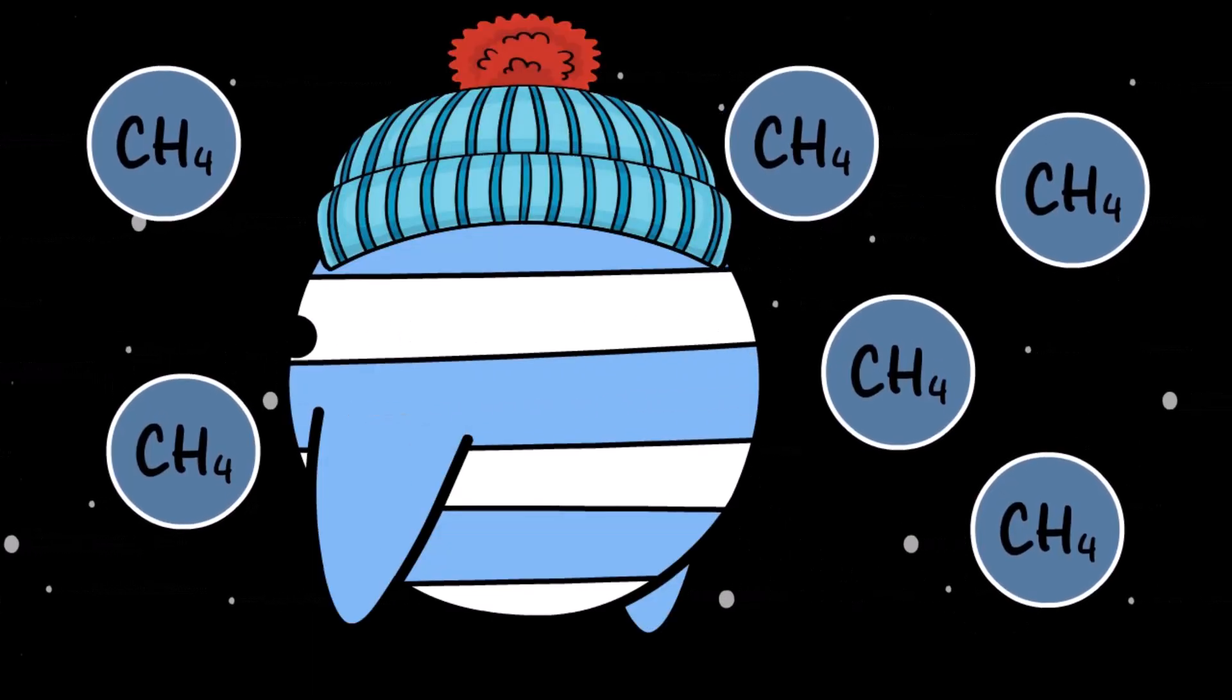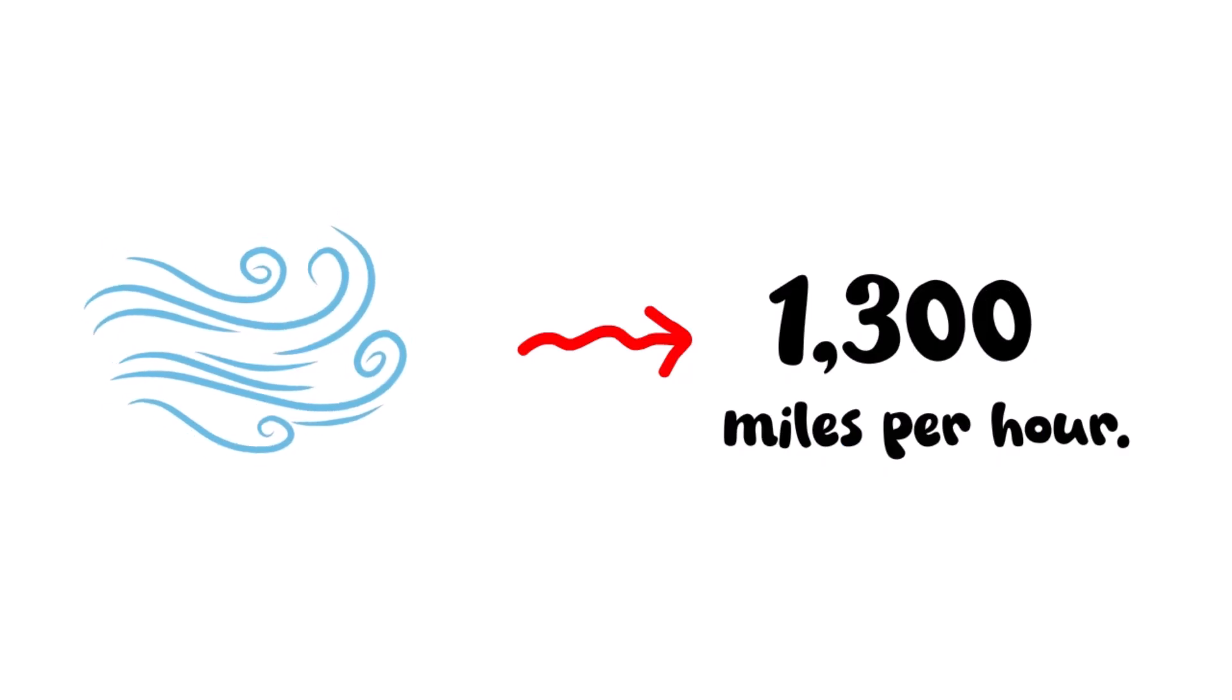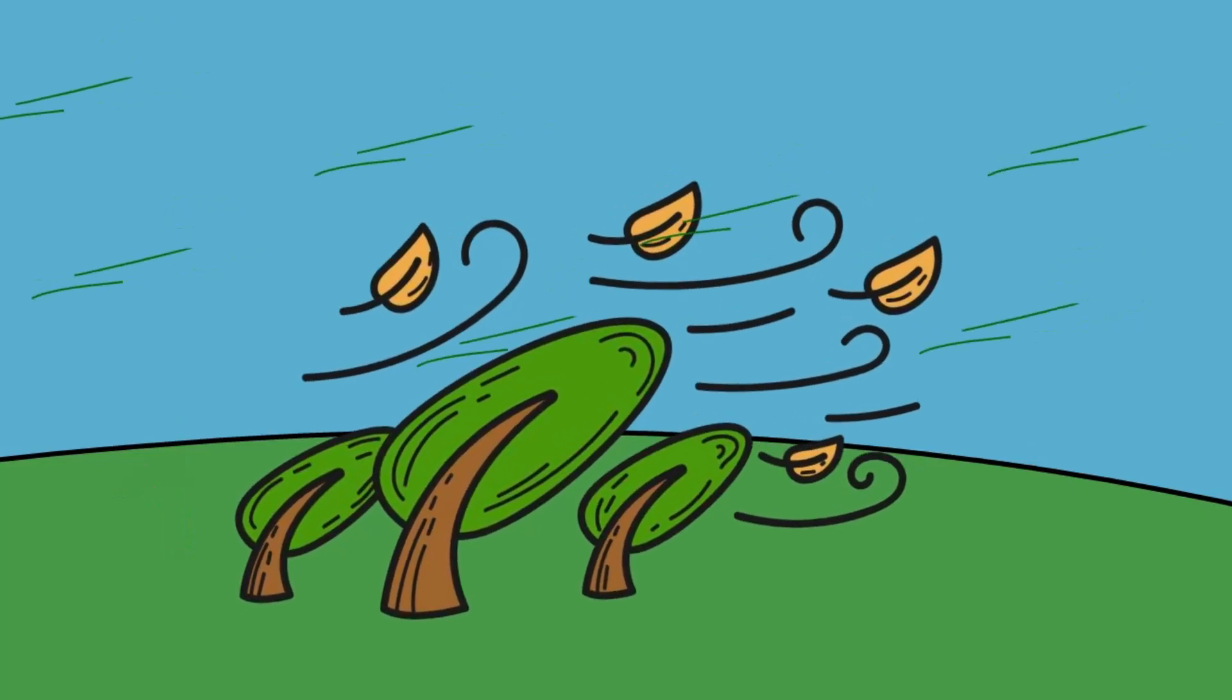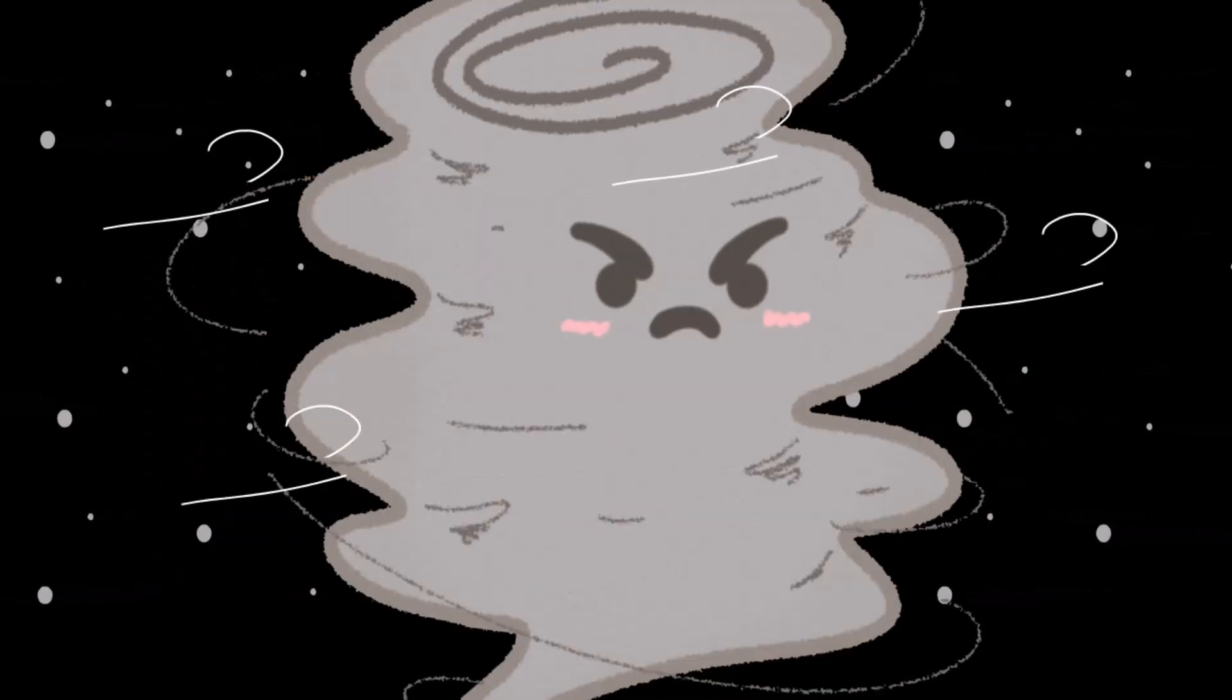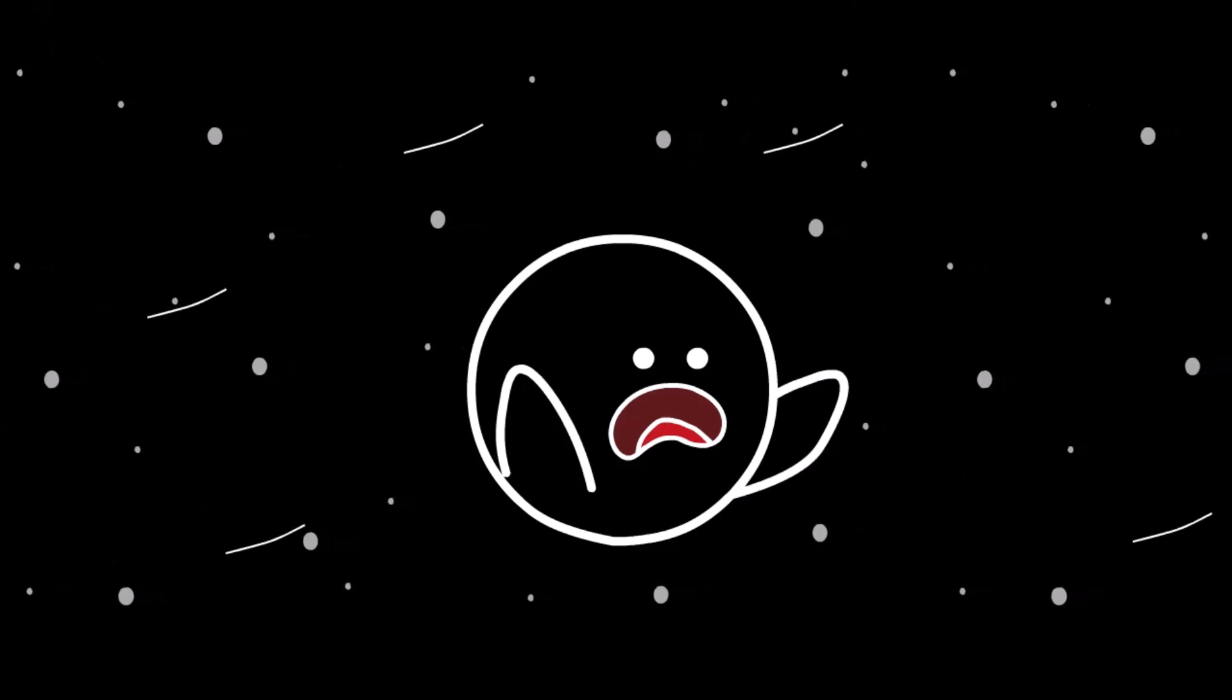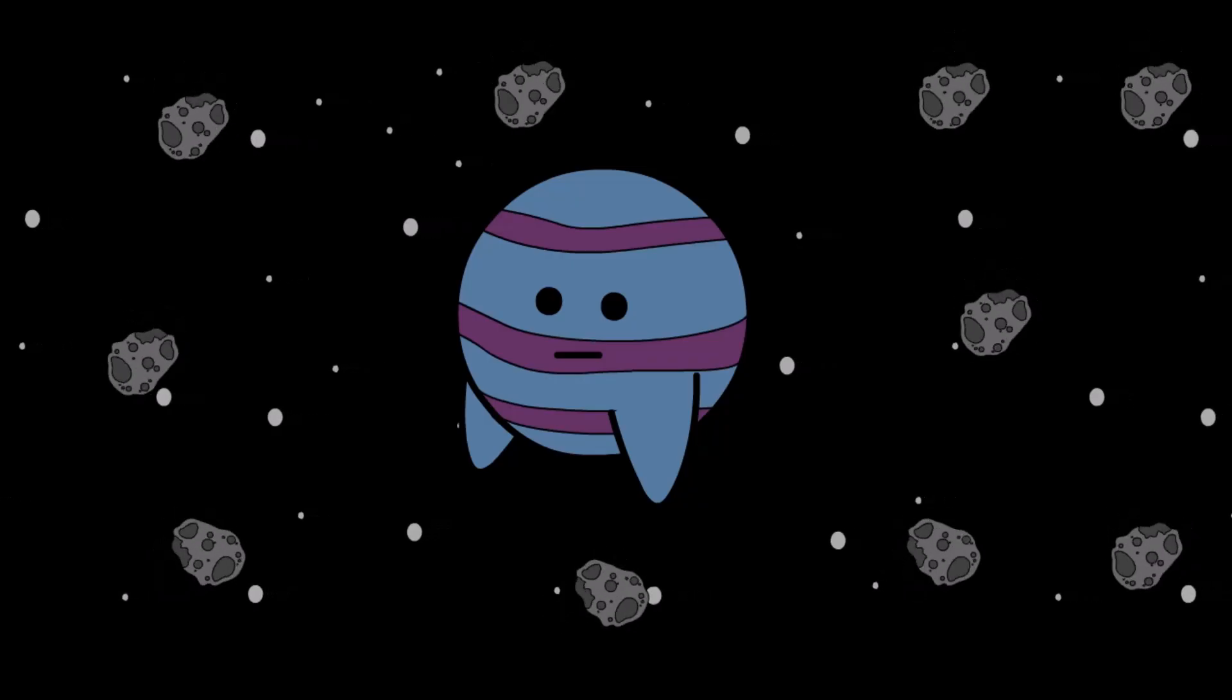Neptune is basically a giant, cold, spinning ball of methane-powered chaos. And the chaos is wild. Neptune has the fastest winds in the entire solar system. They blast across the planet at over 1,300 miles per hour, faster than most fighter jets. These winds power storms so massive, they make Earth's hurricanes look like light breezes. Neptune's storms are huge, some the size of Earth itself, and they can last for years. Scientists still don't fully understand how Neptune gets that much energy out there so far from the Sun, but it's clear the planet's weather doesn't mess around.